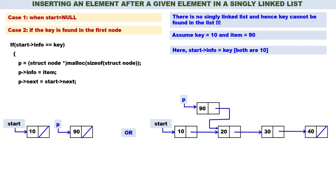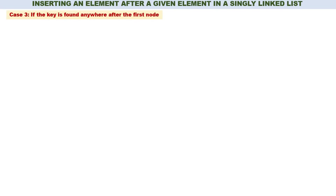Then start of next is equal to p. The connection is established — in the first case, 90 is inserted after 10; in the second case, 90 is inserted in between 10 and 20. Then return start. The logic is very simple: whenever the key is found in the first node, this same logic applies whether the list has one node or many nodes.